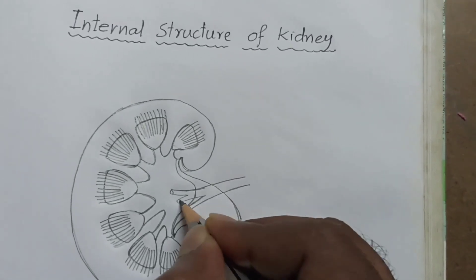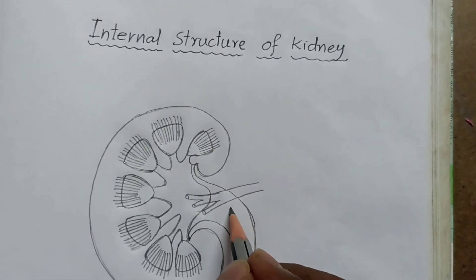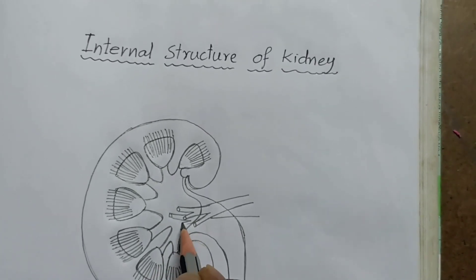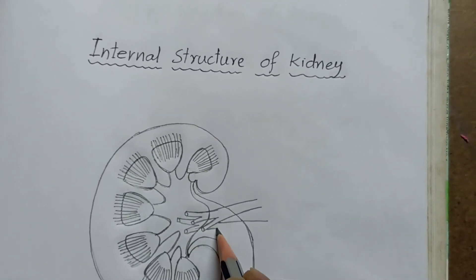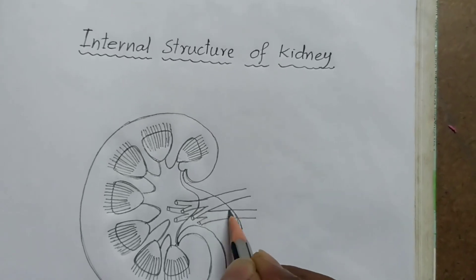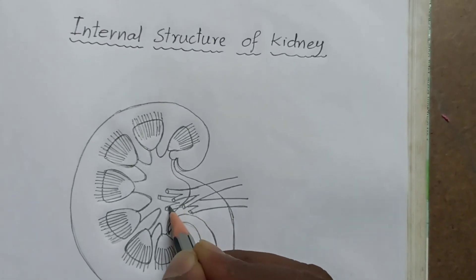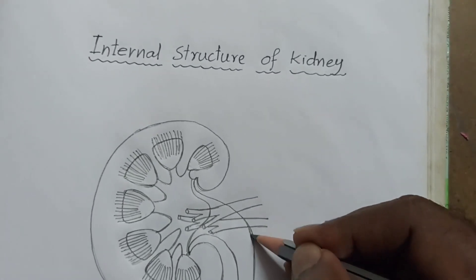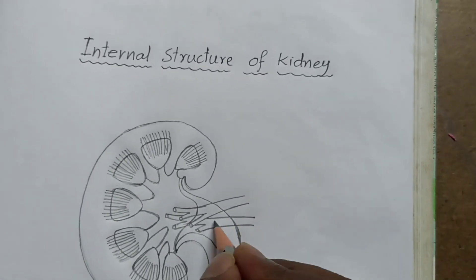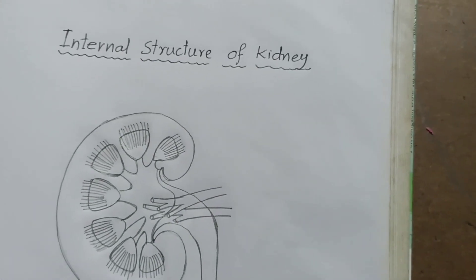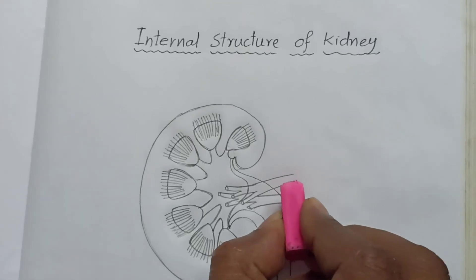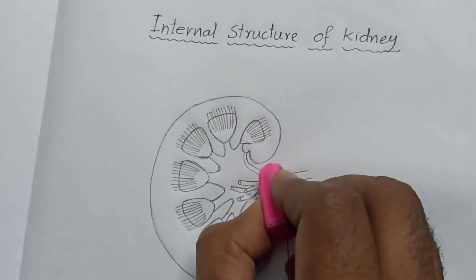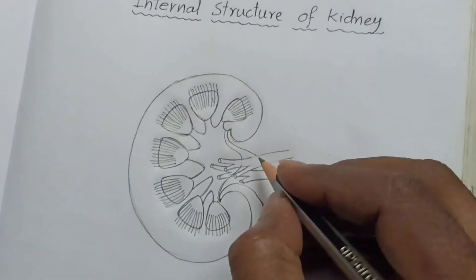Now I am drawing renal veins. You draw like this. Almost completed, the diagram is completed. Just erase the extra portions.